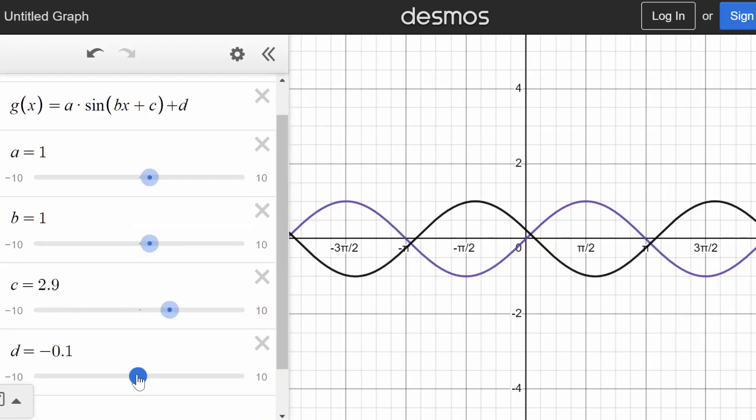Now, d deals with just vertical shifting. So it will move the function up or down relative to the parent function.